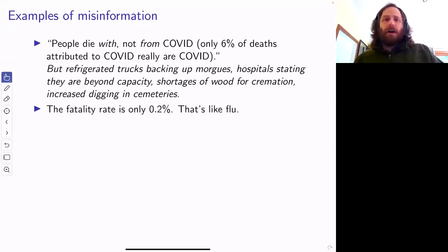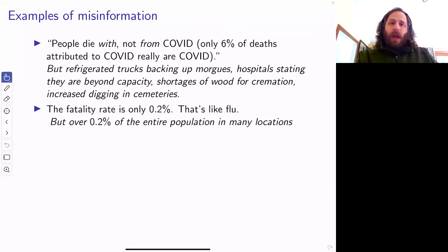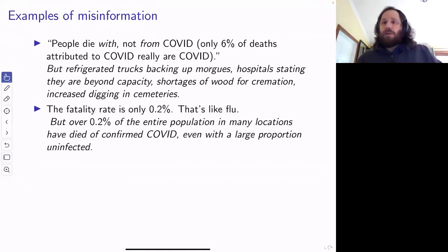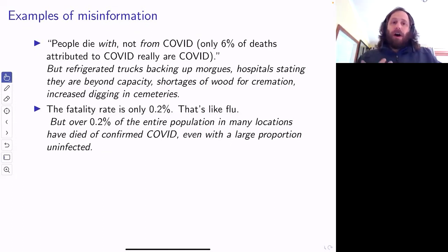Another statistic that often comes out: the fatality rate is 0.2%, and that's like the flu. The flu is probably lower than that even, especially if you measured flu deaths the same way you measure COVID deaths. But the clear response to that is in many populations like the US, more than 0.2% of the entire population has died — even though many people in the US have not been infected or have been vaccinated before they got infected. We have nowhere close to all of the population infected, and yet 0.2% of the population has died. There's no way that's consistent with this kind of fatality rate.